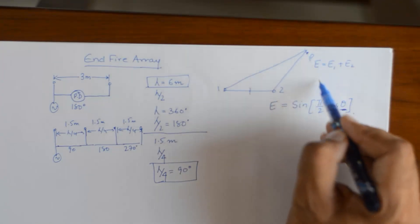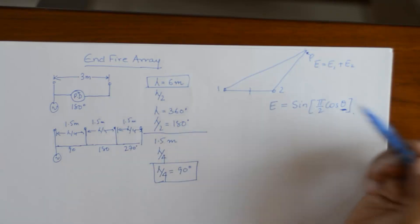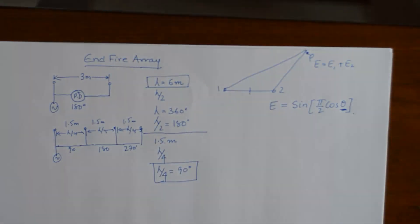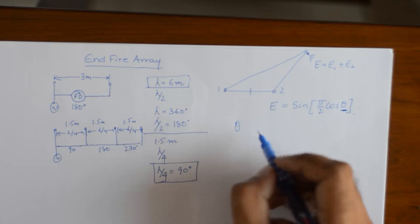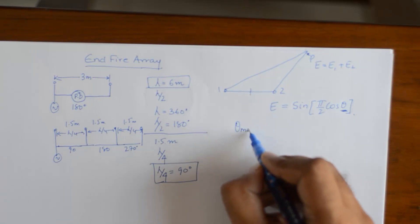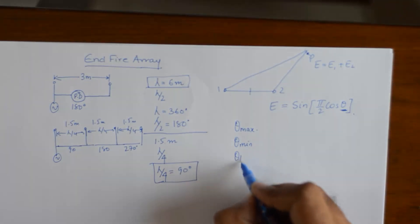And as you can see the electric field intensity received at a point is a function of theta. So as we move this point in terms of angle from these two point sources, the electric field intensity will also change. And the purpose is to find out the points where maximum electric field intensity is received, to find out the points where no electric field is received whatsoever, and third we need to find theta HPPD which is the half power point distributions. So we need to find out theta max, theta min and theta HPPD.